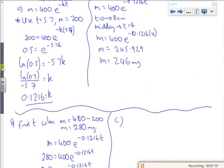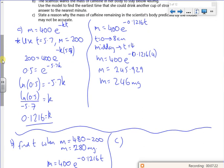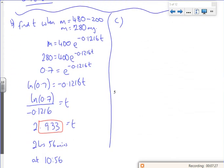Part C says state a reason why the mass of caffeine remaining in a scientist's body predicted by the model may not be accurate.